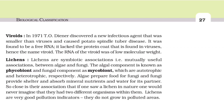In 1971, T. O. Diener discovered a new infectious agent that was smaller than viruses and caused potato spindle tuber disease. It was found to be a free RNA — it lacked the protein coat found in viruses, hence the name viroid. The RNA of the viroid was of low molecular weight. Lichens are symbiotic associations between algae and fungi. The algal component is known as phycobiont and the fungal component as mycobiont, which are autotrophic and heterotrophic respectively. Algae prepare food for fungi, and fungi provide shelter and absorb mineral nutrients and water for their partner. So close is their association that if one saw a lichen in nature, one would never imagine that it contained two different organisms. Lichens are very good pollution indicators — they do not grow in polluted areas.